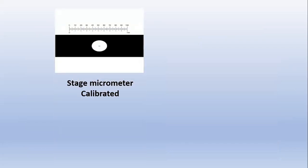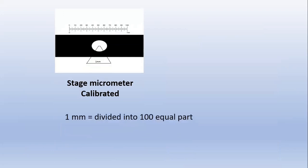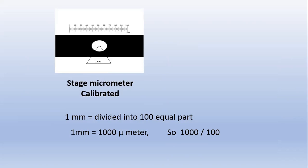For this purpose, we require a stage micrometer, which is a calibrated one. The total scale of the stage micrometer is one millimeter in size, and this one millimeter scale is divided into one hundred equal parts. One millimeter equals 1000 micrometers, so dividing 1000 by 100, the size of one part comes to 10 micrometers. Just remember: one part of the stage micrometer is equal to 10 micrometers.